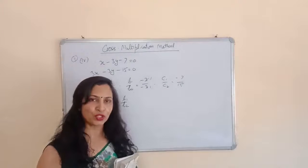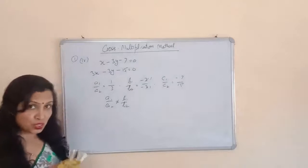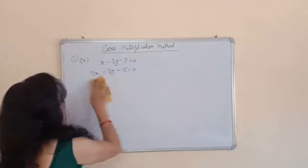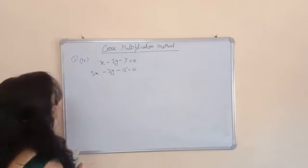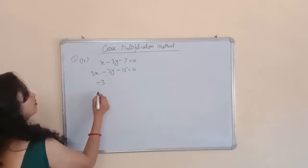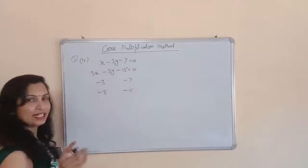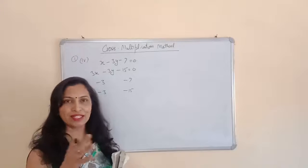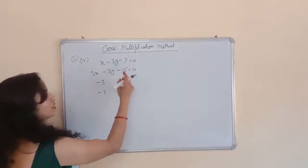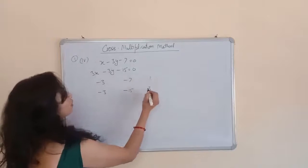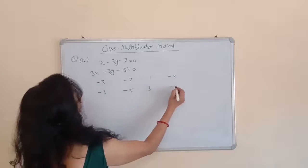Since these equations have a unique solution, we will solve them using the cross multiplication method. First, write the coefficient of y: b1 = -3 and b2 = -3. Then the constants: c1 = -7 and c2 = -15. Then the coefficient of x: a1 = 1 and a2 = 3. Again write the numbers with their sign. And again the coefficient of y: -3 and -3.